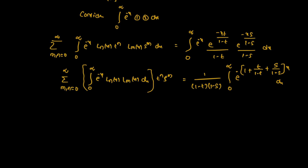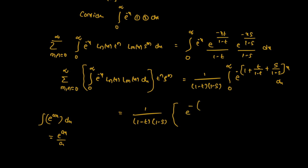Left hand side and right hand side. 1/(1-t) · (1-s). Integration with e^(ax): e^(ax) divided by the x-coefficient in the denominator. So the integration of e^(-(1 + t/(1-t) + s/(1-s))x) gives e^(-(1 + t/(1-t) + s/(1-s))x) / (1 + t/(1-t) + s/(1-s)).